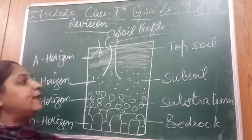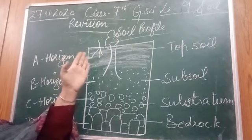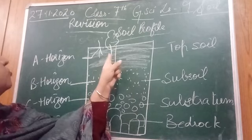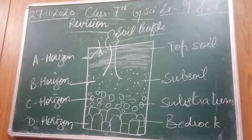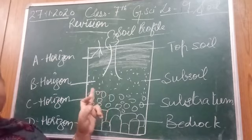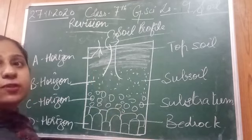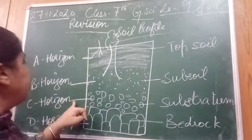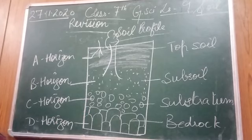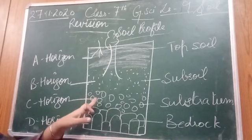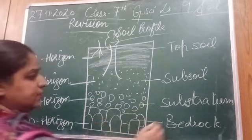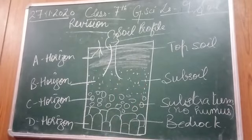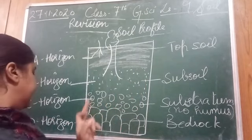Then comes the B horizon — it is just below the topsoil. It contains little humus compared to the A horizon. This layer is rich in minerals and iron oxides, and the roots of trees reach up to this layer to get minerals and water. It is lighter than the A horizon. Coming to the C horizon or substratum — it is below the B horizon, lacks humus entirely, and may contain cracks or crevices.